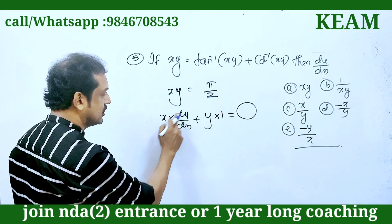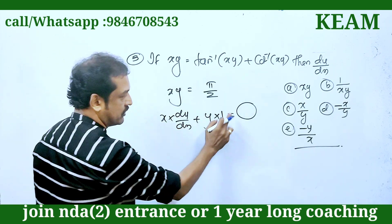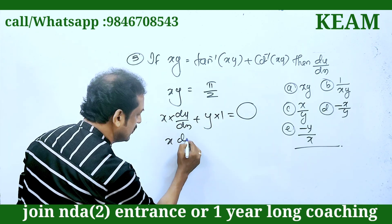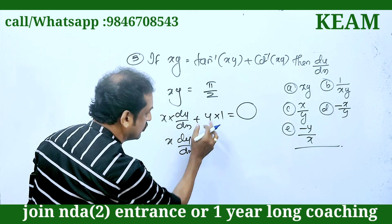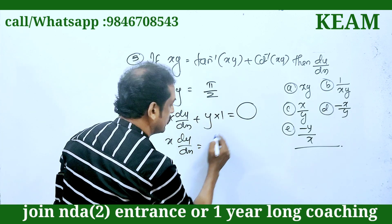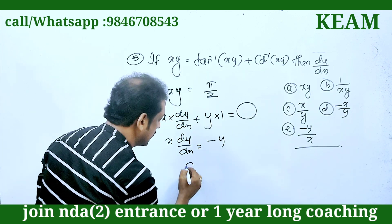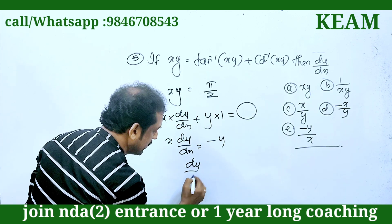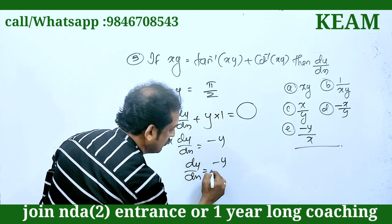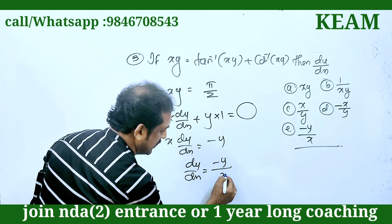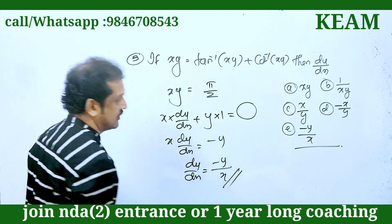x·(dy/dx) plus y equals 0. Therefore, x·(dy/dx) equals -y. So dy/dx equals -y/x, which is the correct answer.